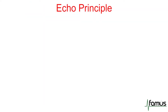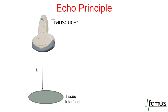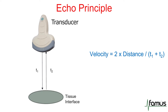Next, we want to look at the echo principle. We put a voltage on our ultrasound transducer. Ultrasound is generated and takes time T1 to hit a tissue interface. There it gets reflected back to the ultrasound transducer, and the ultrasound device can calculate the depth of the signal with the formula: velocity equals distance over time.